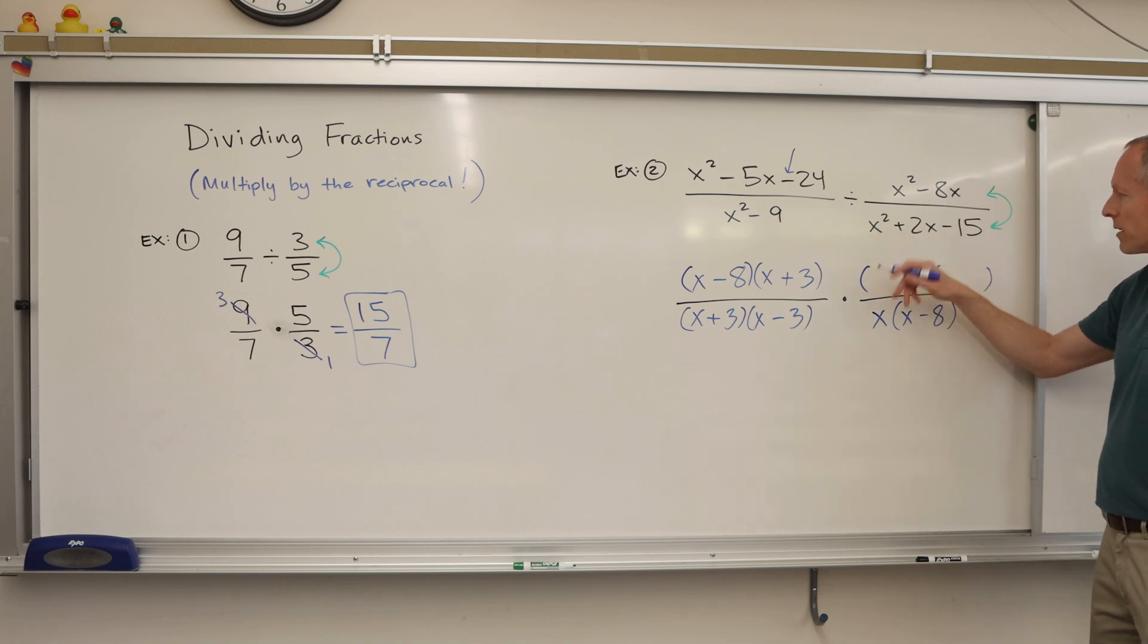And then we have this one, which is now going to be flipped to the top. And that one doesn't have a GCF. There's nothing in common. So then we do the normal factoring. x squared is x times x, 15, probably 5 times 3, probably not 15 times 1. So let's try that. 5 times 3.